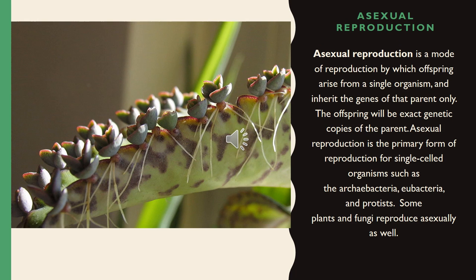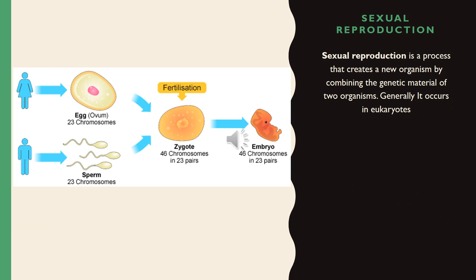Asexual reproduction is a mode of reproduction by which offspring arise from a single organism and inherit the genes of that parent only. The offspring will be exact genetic copies of the parent. Asexual reproduction is the primary form of reproduction for single-celled organisms such as archaebacteria, eubacteria, and protists. Some plants and fungi reproduce asexually as well.